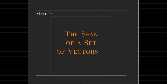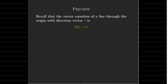In this video, we're going to review some concepts that we've already touched on in previous videos, but we're going to use some new terminology. The concept we're going to introduce is called the span of a set of vectors. Let's start by reviewing some of the things that are very closely related to the notion of span.